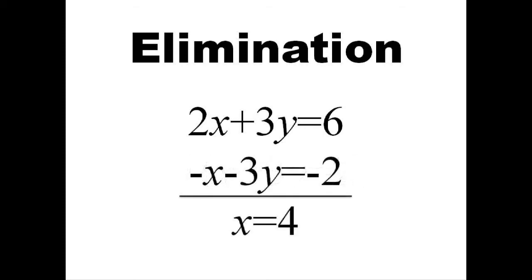After multiplying every term in the second equation by negative 1, the two equations are added together. We're left with 1x on the left side and 4 on the right.